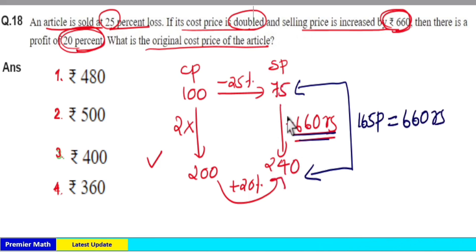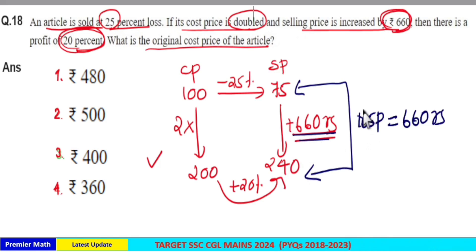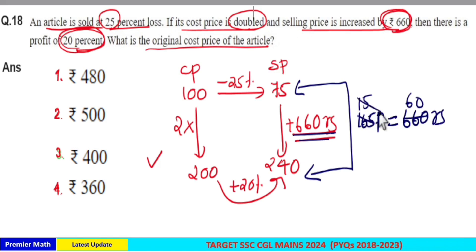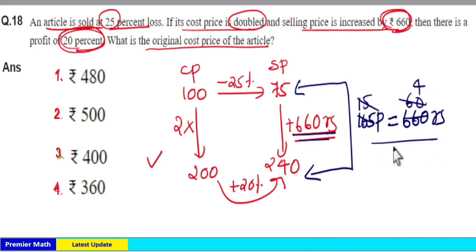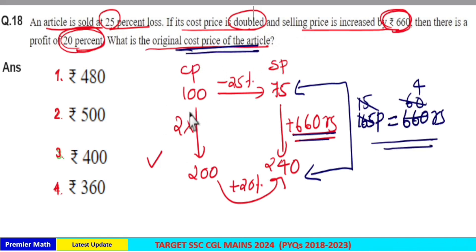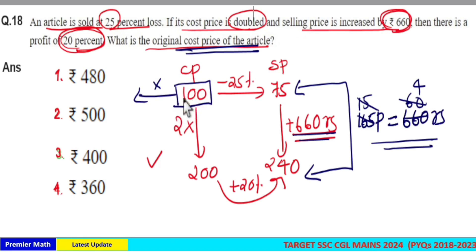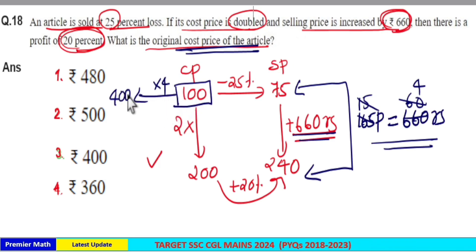The difference between the initial selling price and the current selling price is 660 rupees, which corresponds to 165 parts. Dividing: 660 divided by 165 gives 1 part equals 4 rupees. The original cost price was assumed as 100 parts, so the original cost price is 100 multiplied by 4 = 400 rupees.